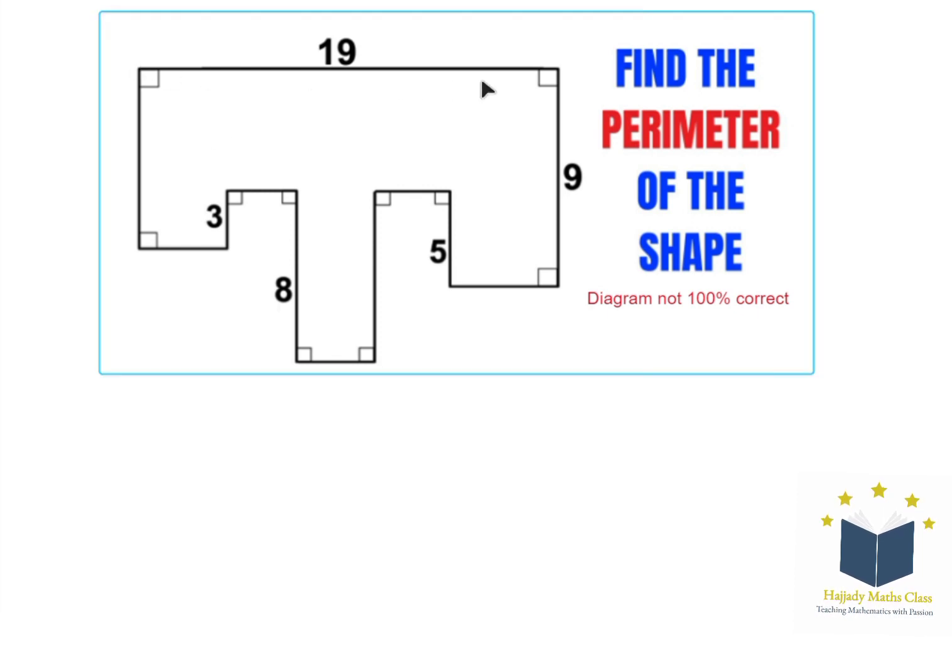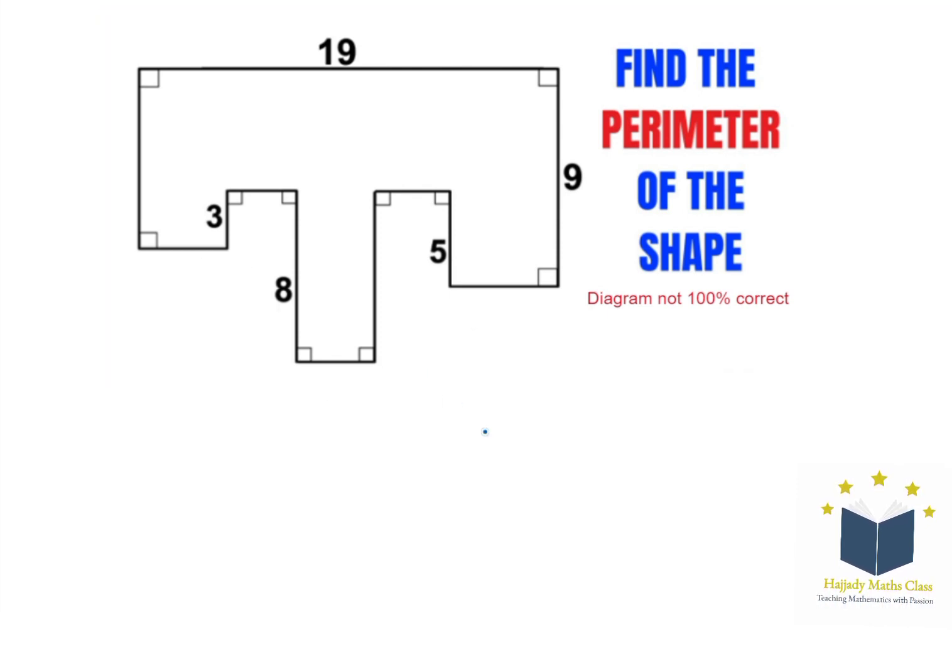The horizontal line here is 19, so the horizontal line below should also sum up to 19. If you have this horizontal line A, B, C, D,